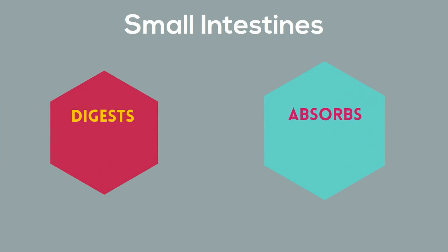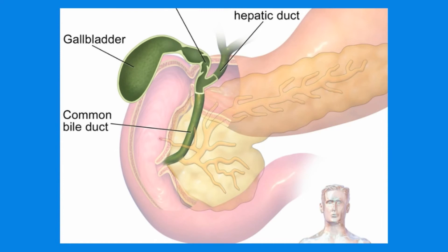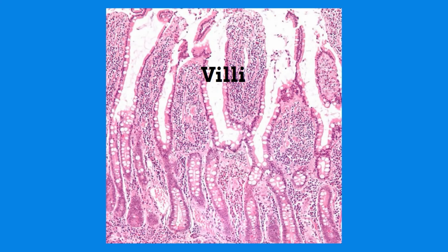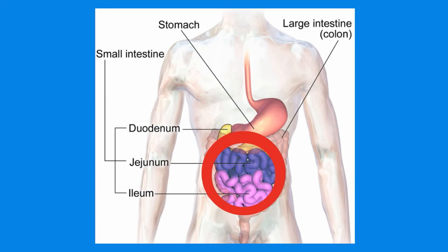The small intestine carries out two main functions: it digests and absorbs. To digest food, the gallbladder releases bile into the small intestine to help break down fat. In addition, the pancreas secretes a digestive enzyme into the intestines to help break down proteins. All this occurs in the top part of the intestines. The walls of the small intestines have finger-like projections called villi that help absorb nutrients, which then pass directly into the bloodstream. Much of this absorption occurs in the second half of the intestines.